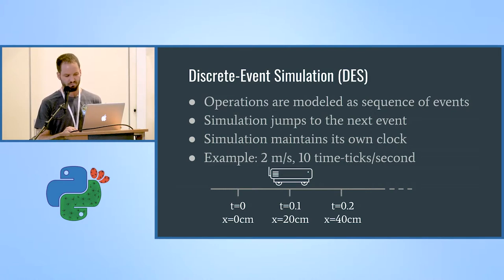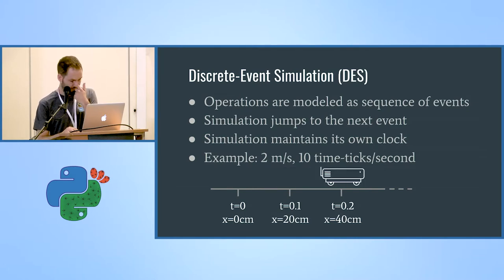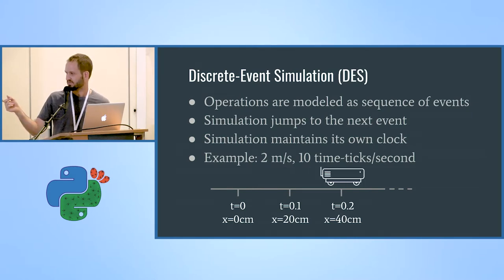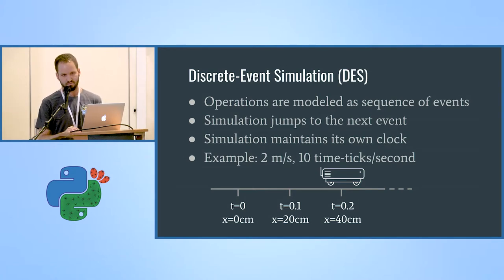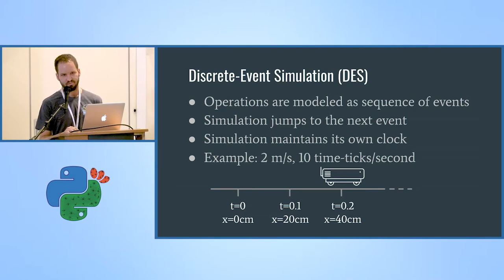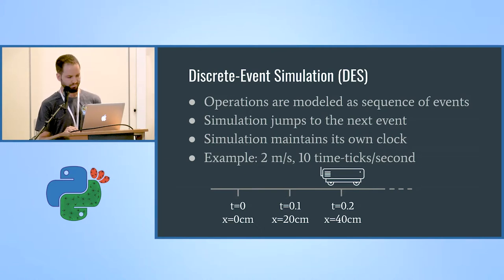The simulation then moves to the next time tick and so on. Notice there is no intermediate state for the robot — it jumps from 20 centimeters to 40 centimeters, never in the middle. In reality, the robot anyway sends telemetry only a few times per second, so the behavior looks the same to the system.